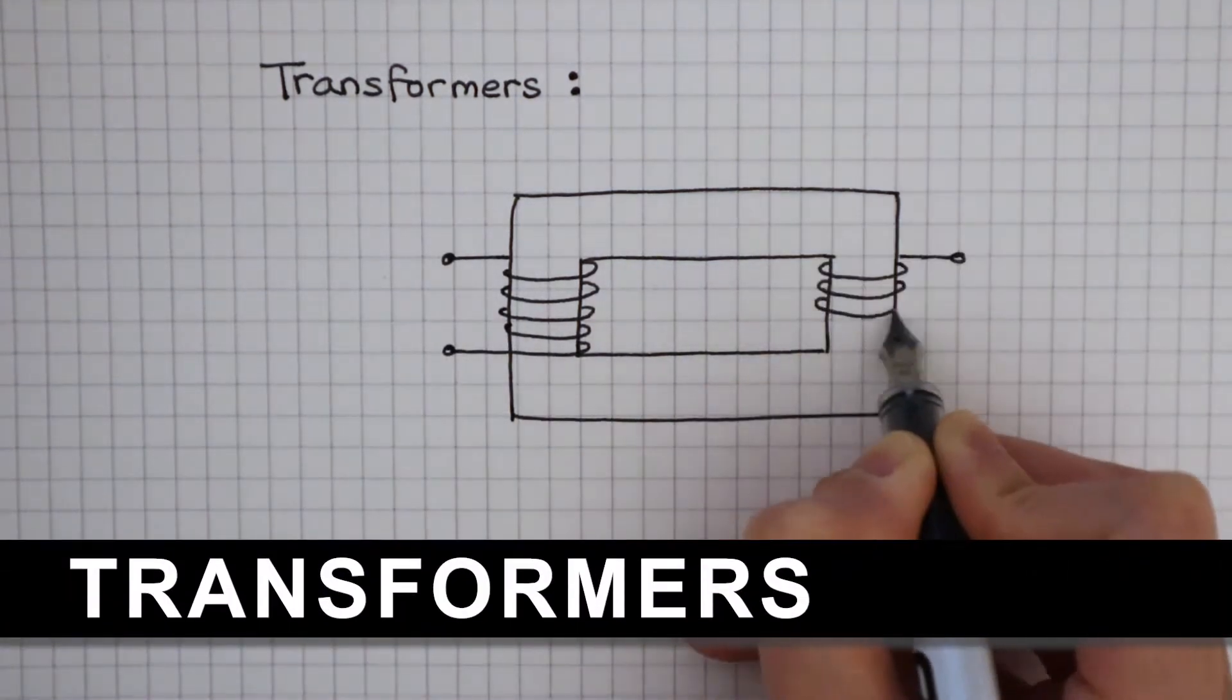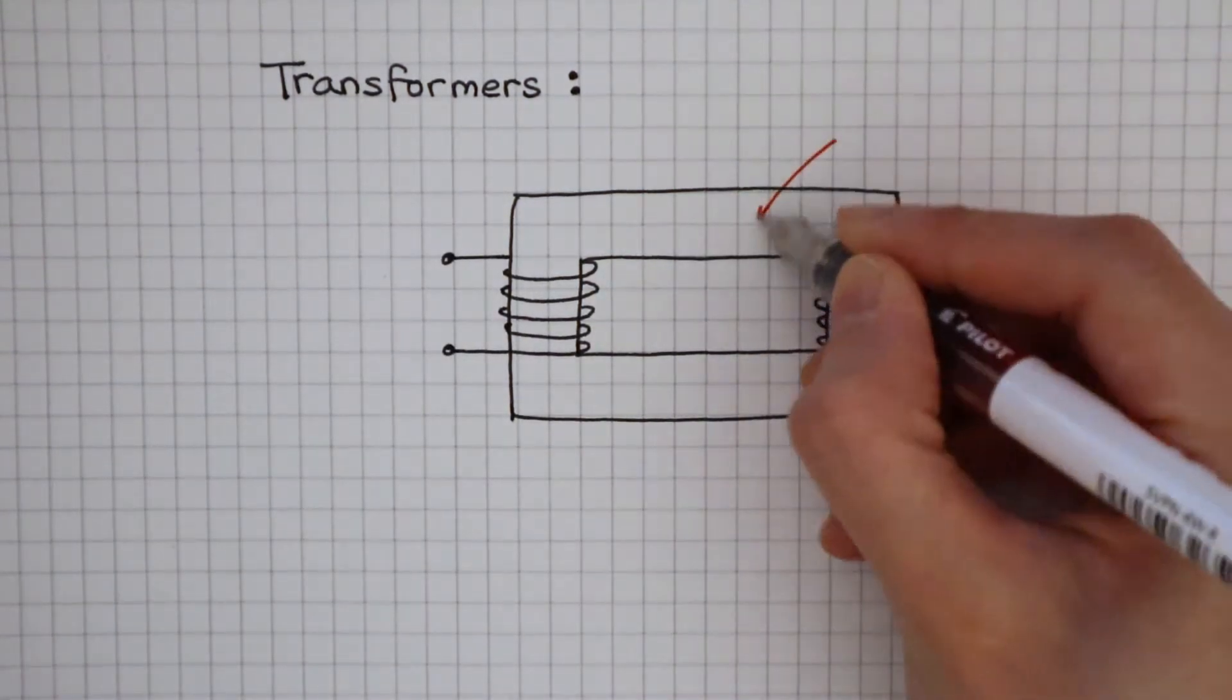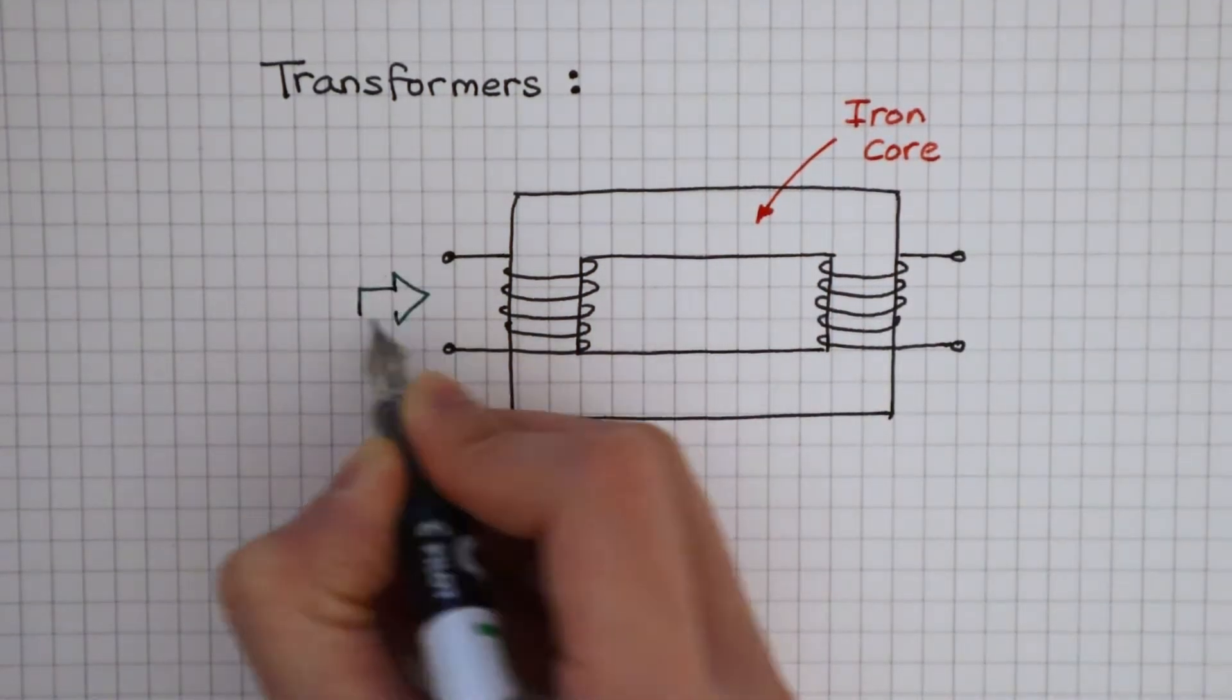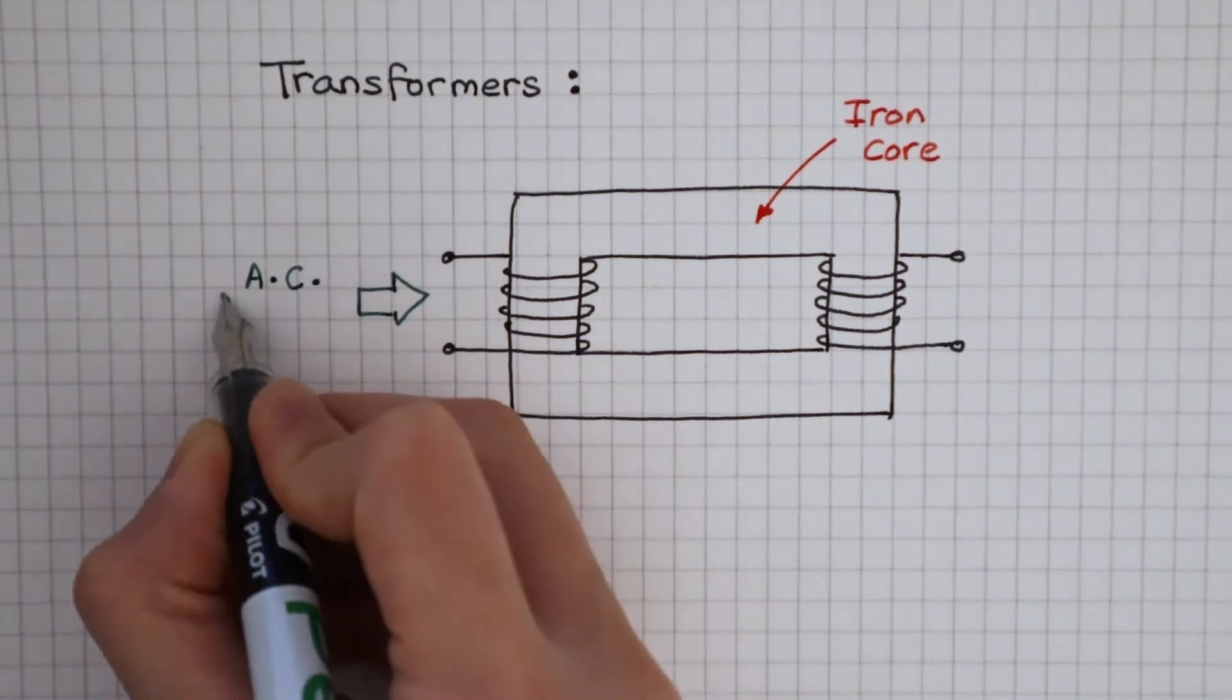A transformer is made from two coils of wire wrapped around an iron core. It is a device that is designed to change the voltage of an alternating current.